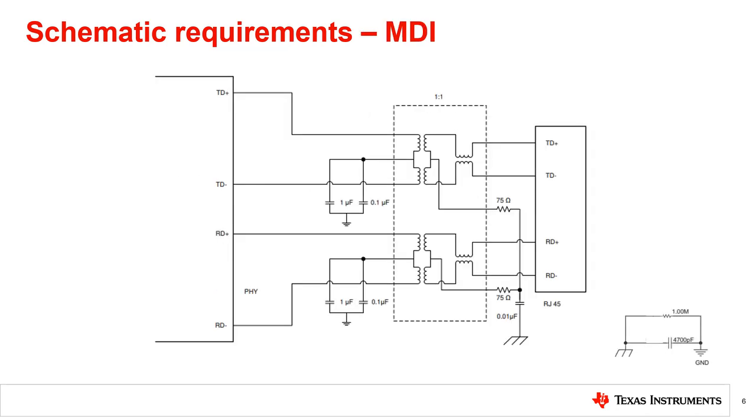On the MDI side, magnetics should be selected as per the specifications listed in the datasheet. The RG45 specs to consider include the turn ratio, isolation, and return loss. The dashed box shown here is highlighting the common mode choke and magnetics of the PHY.